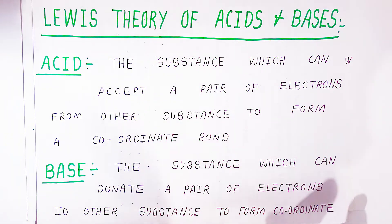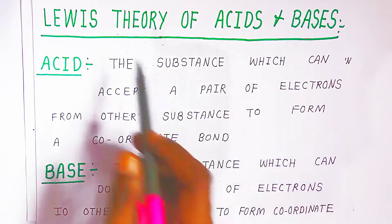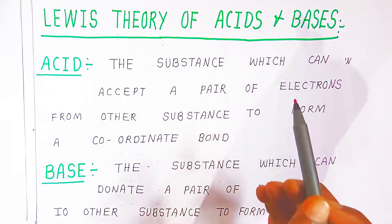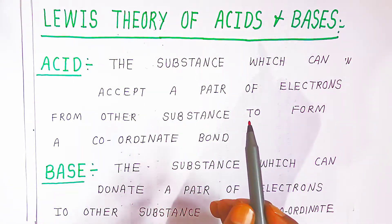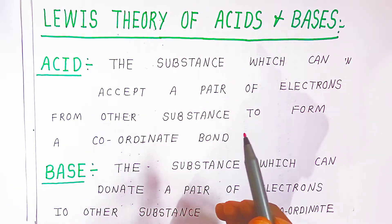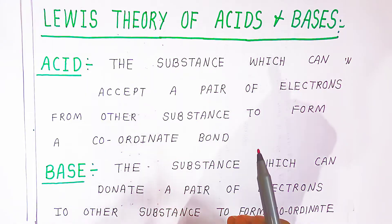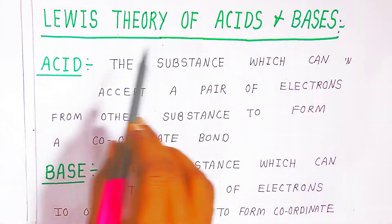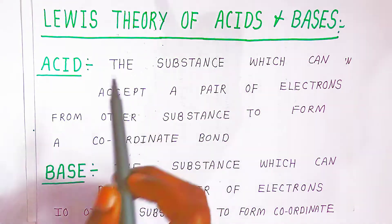Hello students, welcome to Bholanatha Academy. Today we are going to see Lewis theory of acids and bases. In the last video we saw the solvent system concept, also called the auto ionization concept. Now in this video we are going to see the Lewis theory of acids and bases.